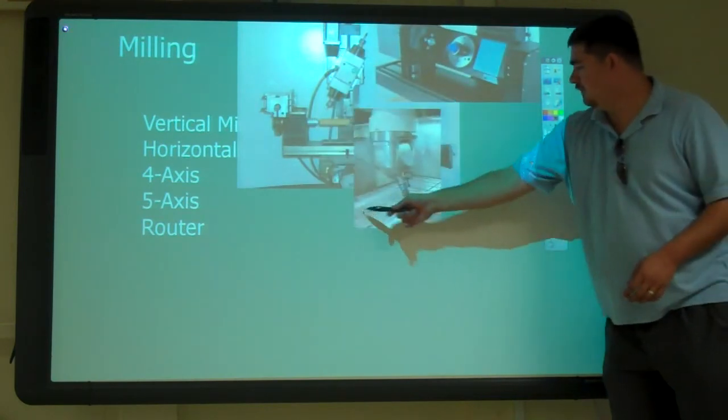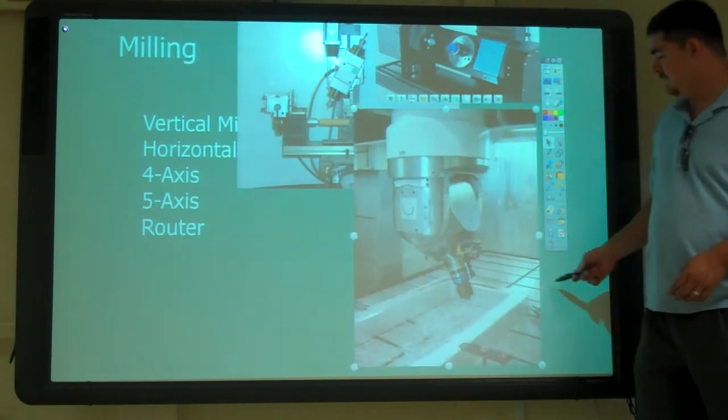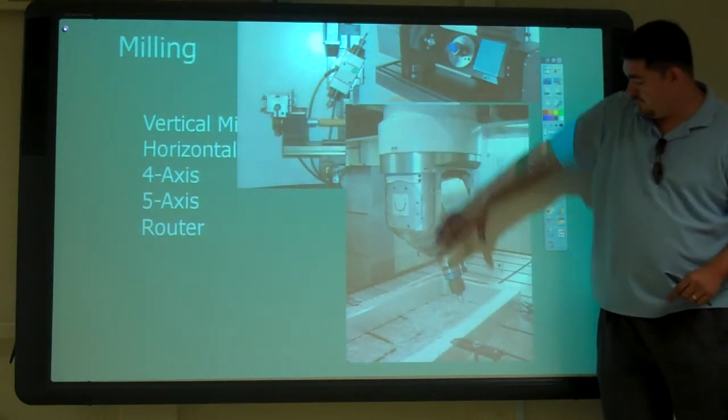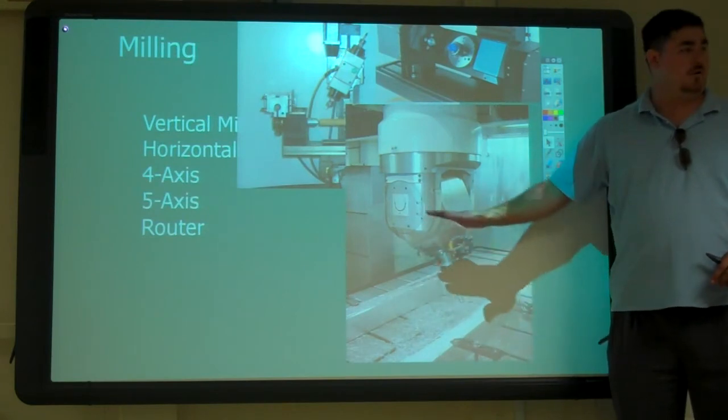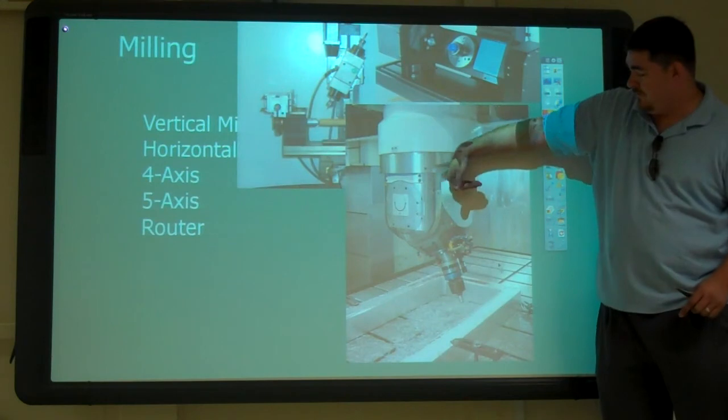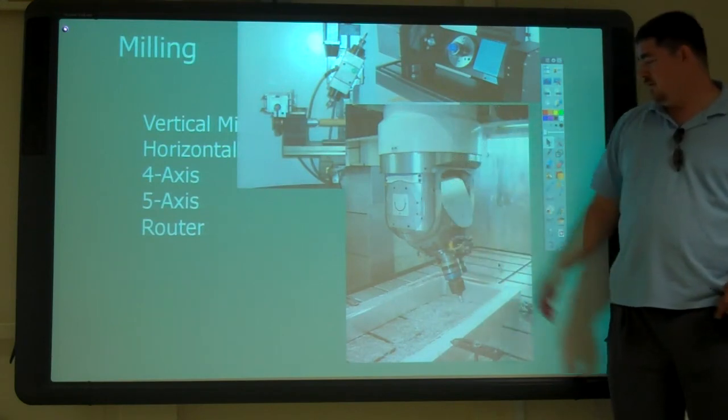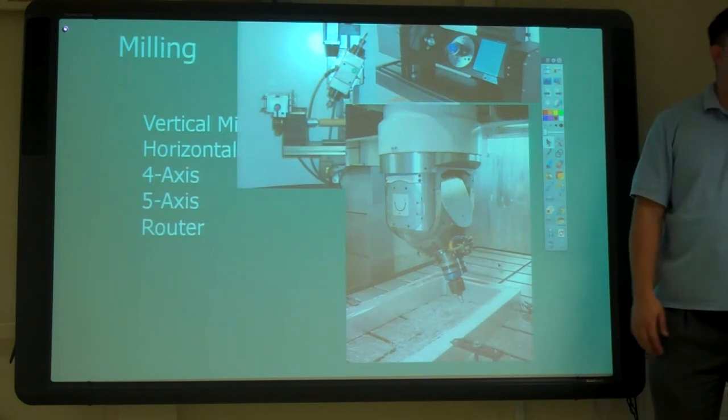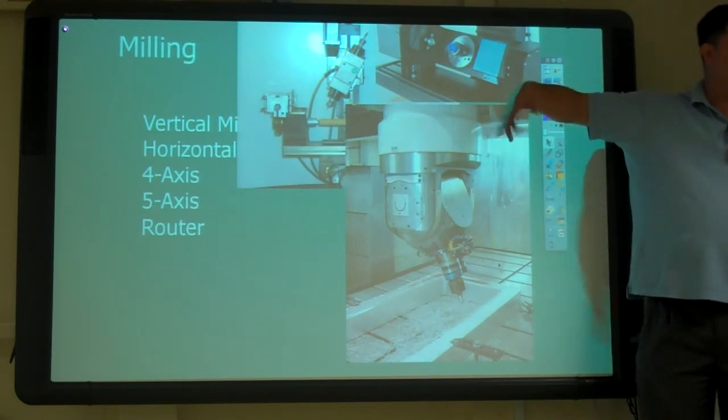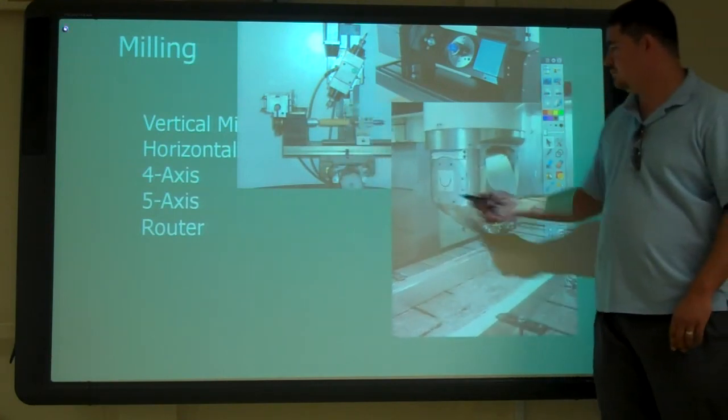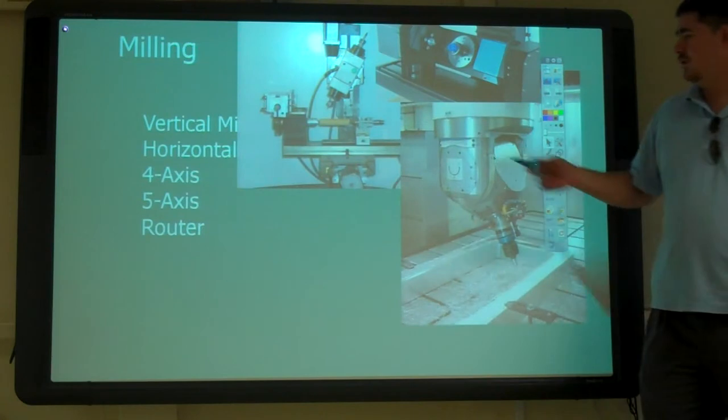Or you can do the big boy fifth axis and have it where your table moves or the table is stationary, and this now rotates, pivots, so you can kind of get into everywhere. Goes up and down, turns, moves over. So, questions on those?